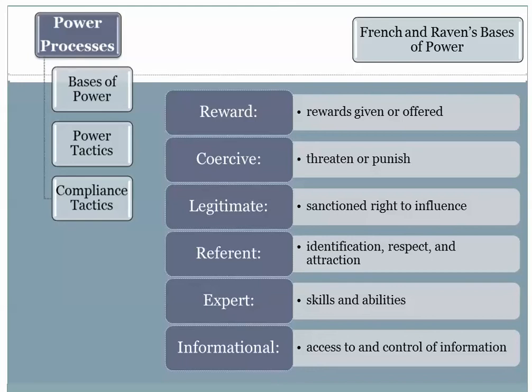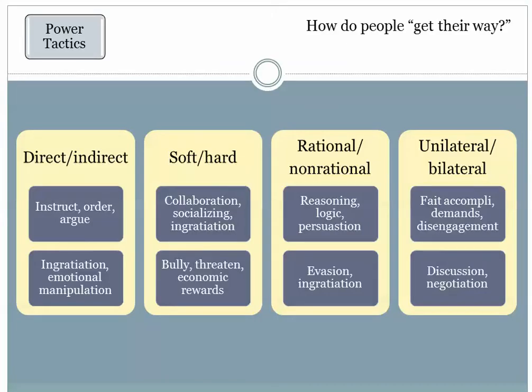But people can influence each other not only by rewarding, threatening, punishing, sanctioning, or demonstrating their expertise — there's also a wide range of social tactics that people can use to get their way. For example, if you have the text available, Table 8.2 on page 255 is just a sample of the many power tactics people use to influence other people. It includes things such as bullying, collaborating, complaining, consulting, criticizing, demanding, discussing, disengaging — and that's only up to the Ds. So there are many ways that people can get their way.